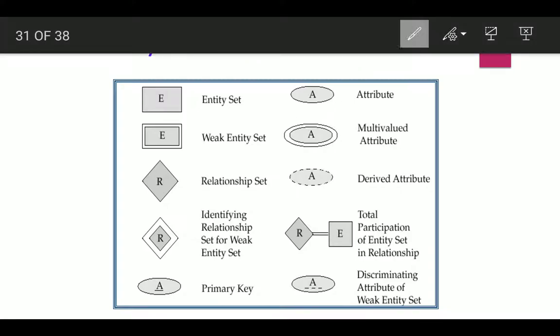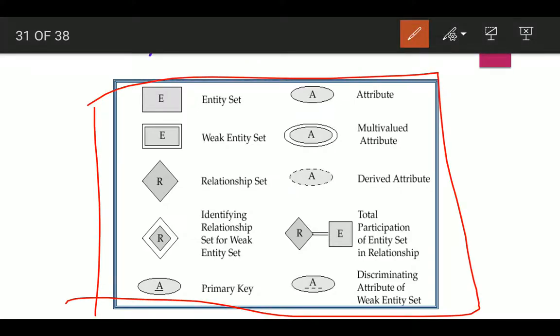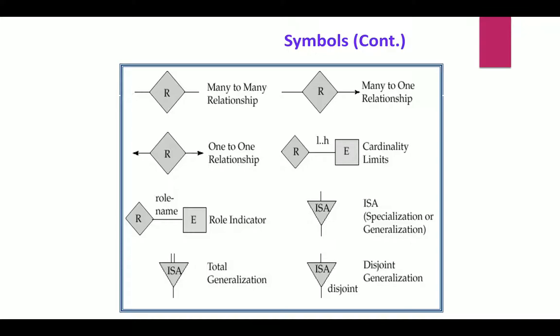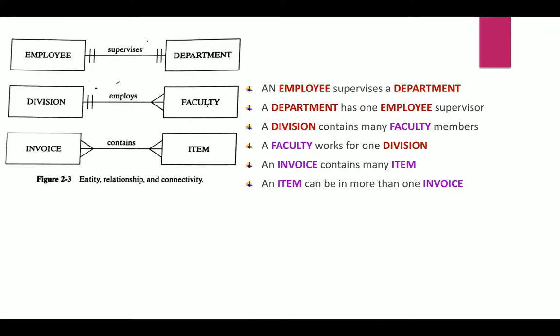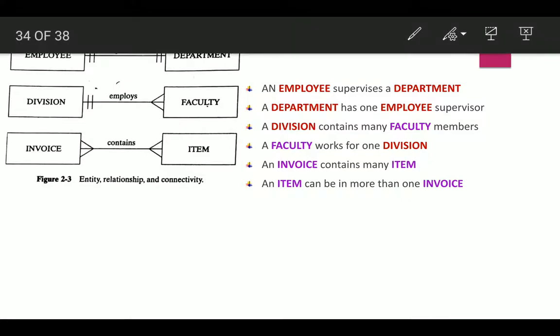In summary, these are the symbols used in ER diagrams — from entity set to weak entity set, relationship, and so on. The diagram also shows entity, relationship, and connectivity — for example, a supervisor having one-to-many relationships. The relationship between entities and their attributes is depicted in the form of verbs.